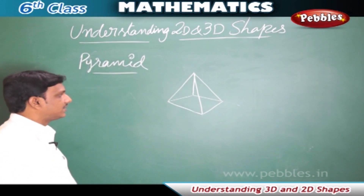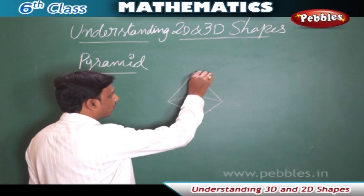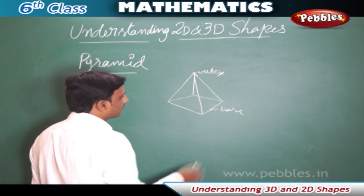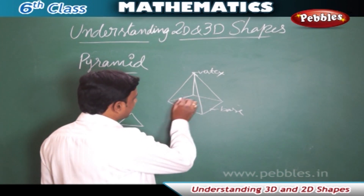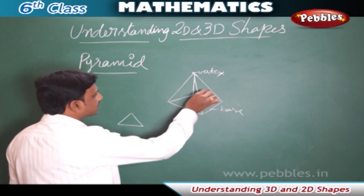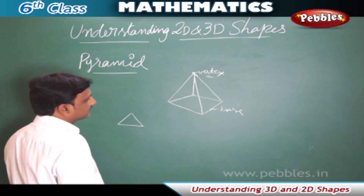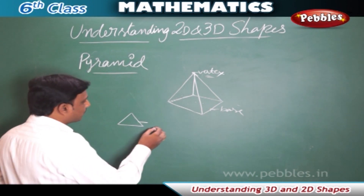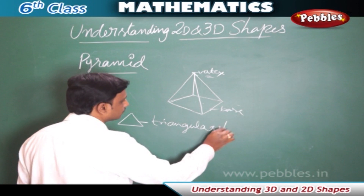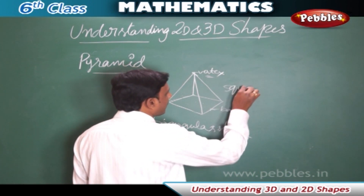A pyramid is a solid shape with a base and a vertex at the top. This pyramid has a square base and the other faces are triangular. All these triangular faces meet at a common point called the vertex. For a triangular pyramid, the base is also triangular in shape. This type of pyramid with a square base is called a square pyramid.